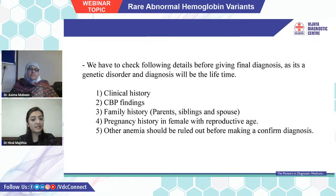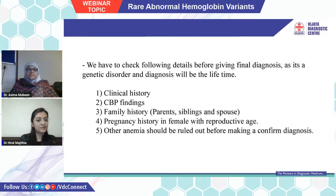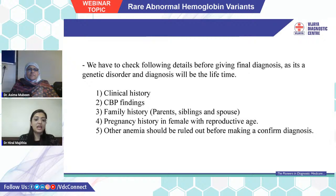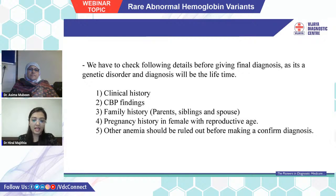Before giving a final diagnosis, we check the following details, as this is a genetic disorder and the diagnosis will be a lifetime diagnosis. We verify the patient's name, age, gender, clinical history including signs, symptoms and duration, complete blood picture with RBC morphology and indices, and family history — whether parents, siblings, or spouse have any abnormal hemoglobin condition. Pregnancy status of females of reproductive age is also required, as some fetal hemoglobin change is normal in pregnancy. Other anemias, mainly nutritional anemias, should be ruled out before confirming diagnosis.